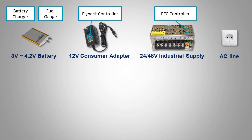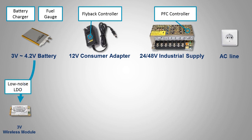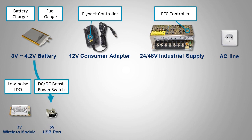Now let's have a look at the final application. A wireless module contains circuits that are sensitive to noise. To provide a stable 3 volt supply, a low noise linear regulator is most suitable. To provide a stable 5 volt for the USB port from a battery, you need a boost converter and maybe a power switch for short circuit protection.